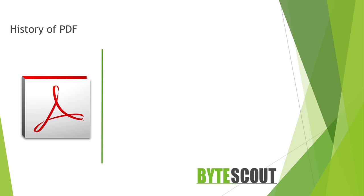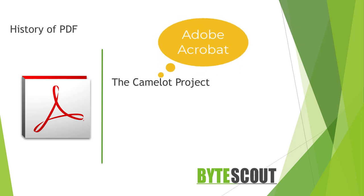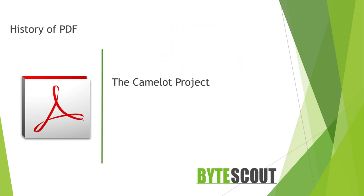They gave the code name Camelot to that project, which quickly grew to become what we all know as Adobe Acrobat today. Two things were very clear in his mind: first, there was a fundamental problem in worldwide business — the ability to print documents to a wide range of printers but no universal way to communicate and view this printed information electronically.